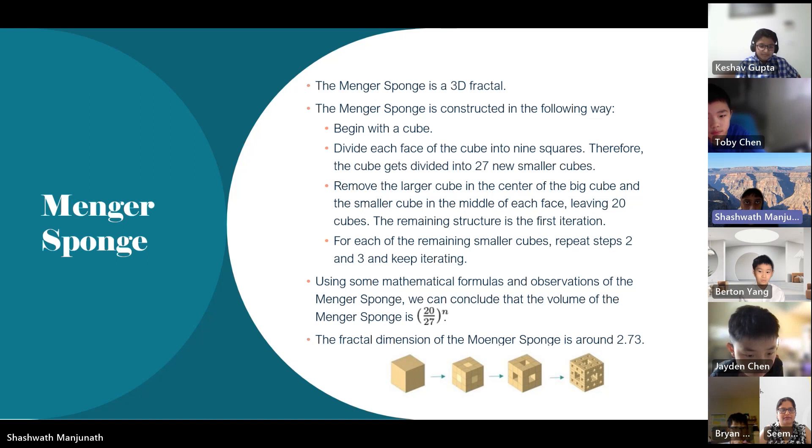The Menger sponge. The Menger sponge is a 3D fractal as shown here. It's constructed in the following way. Begin with a cube. Divide each face into 9 squares. And therefore, the cube gets divided into 27 small cubes. Remove the large cube in the center of the big cube and leave the smaller cube in the middle of each face. This leaves 20 cubes in this cube. The remaining structure here is the first iteration. Now keep iterating these steps until you want to stop.